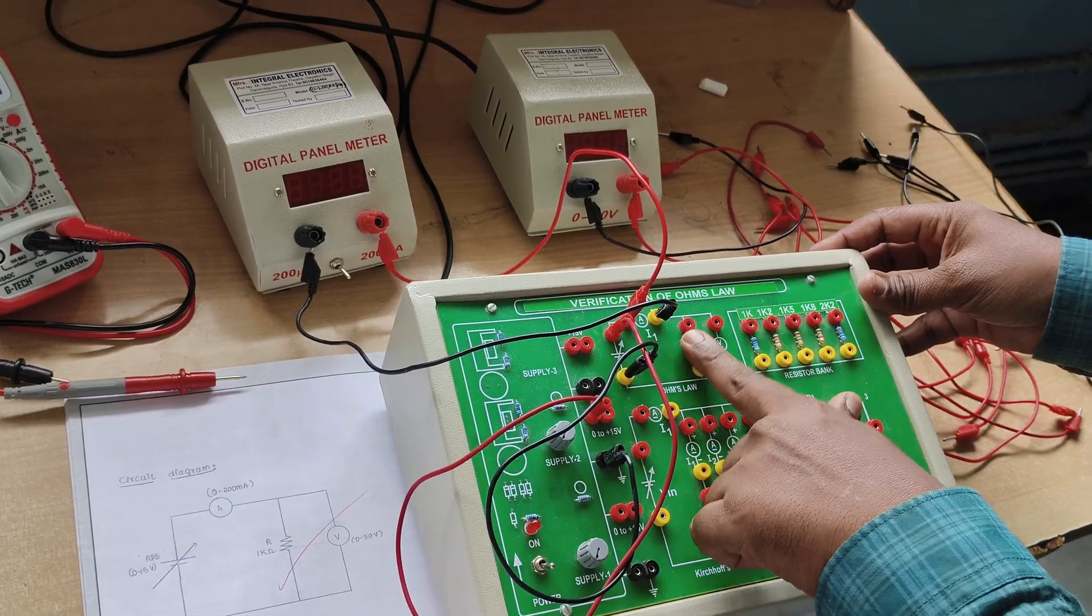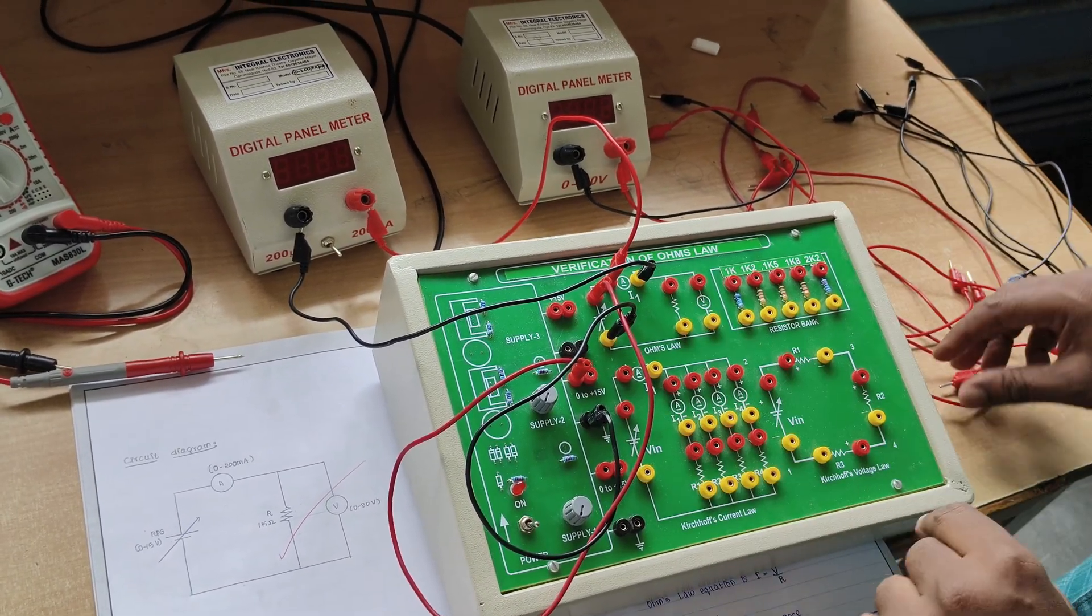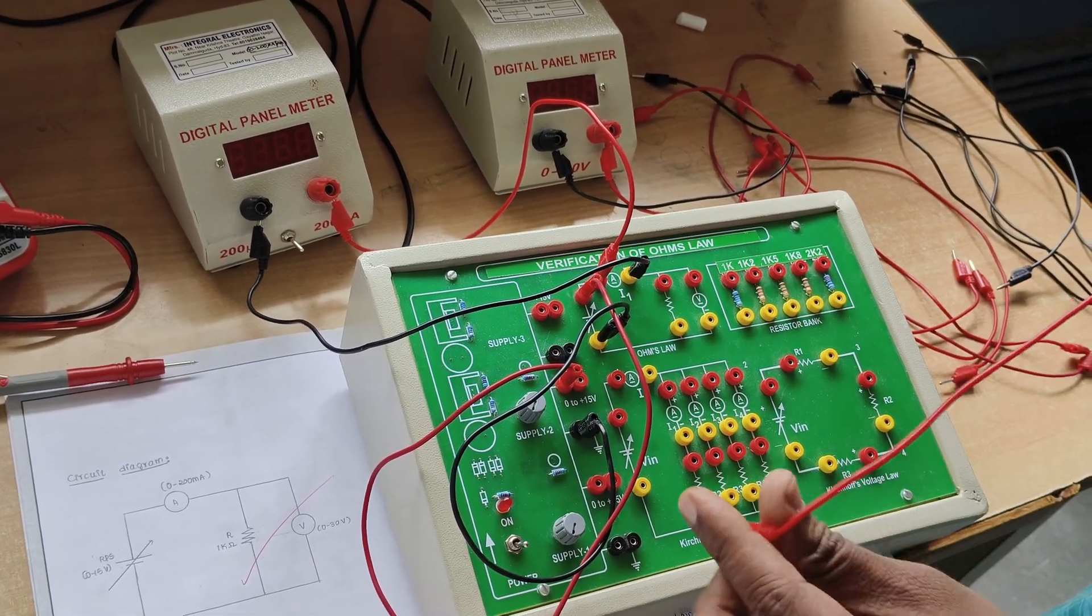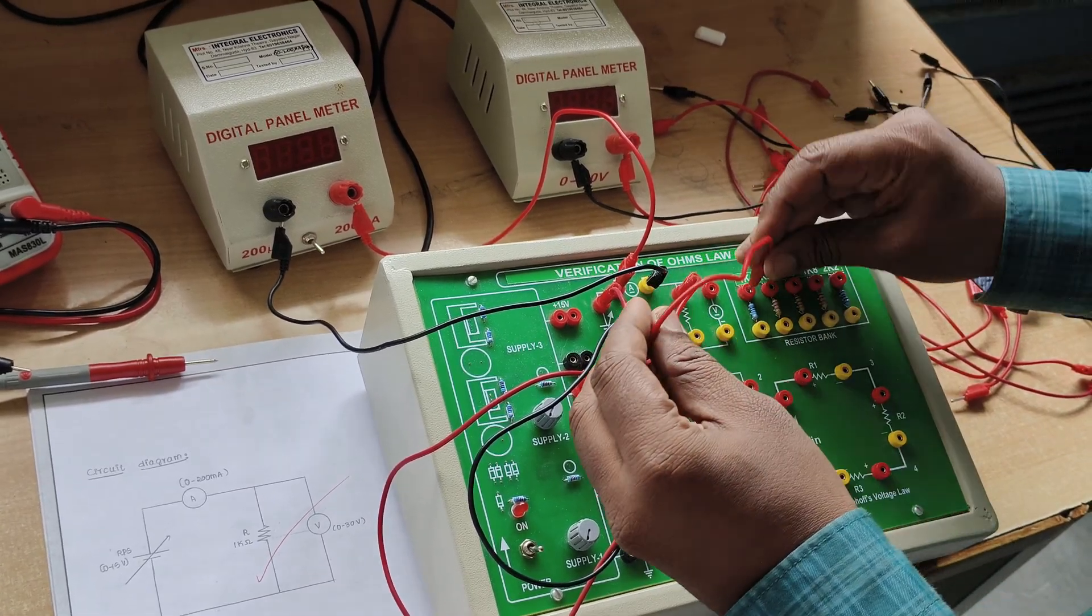After that, there is a voltmeter and a resistance. We are taking a 1 kilo-ohm resistor and connecting it here.